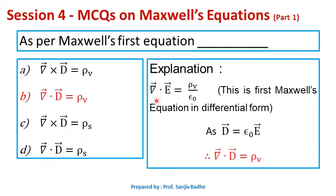Maxwell's first equation is written as divergence of E bar equals rho_V by epsilon naught, where rho_V is charge density. Since the electric flux density D bar equals epsilon naught E bar, we can rewrite Maxwell's first equation as divergence of D bar equals rho_V. So here, option B is the correct option.